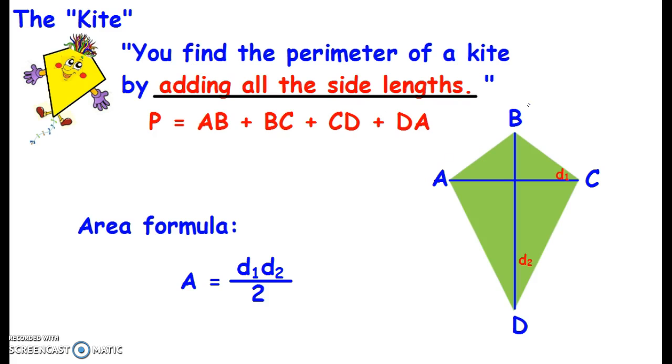Well, I add up all the side lengths. Remember, the perimeter is just the length if I were walking the whole way around. That's the perimeter. So I add AB, BC, CD, and DA, and I get the perimeter of the kite.